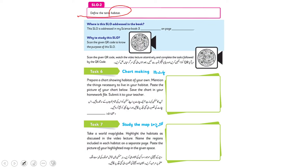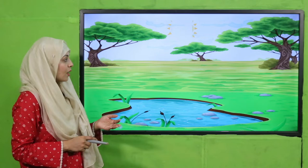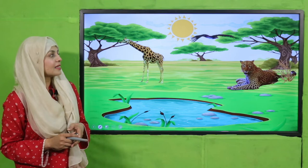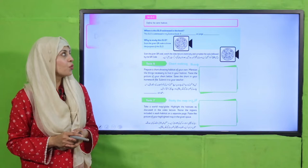We are on SLO Number Two. According to SLO Number Two, the students will be able to define the term habitat. When students study this SLO, they will be able to learn about natural habitat and define what a habitat is — a natural place where all things necessary for a living thing, whether plants, animals, or human beings, are present.